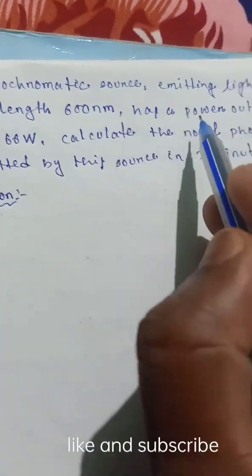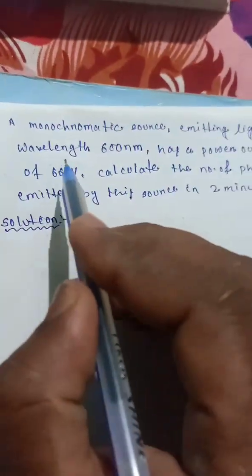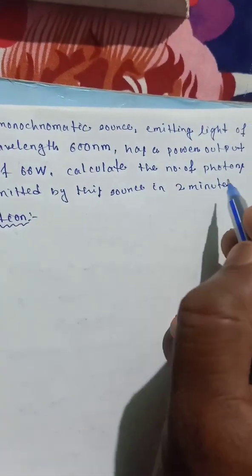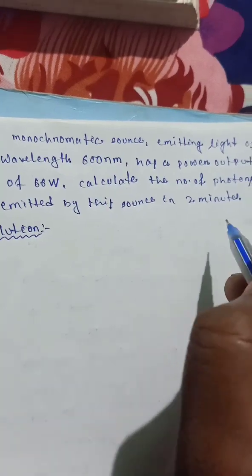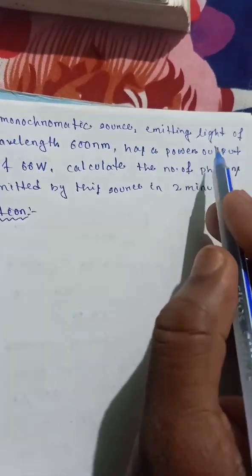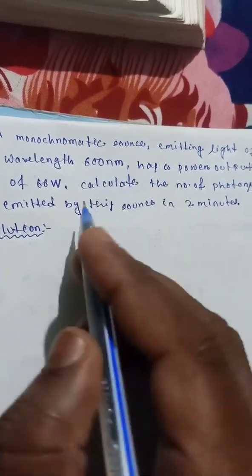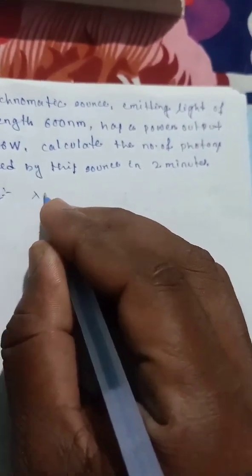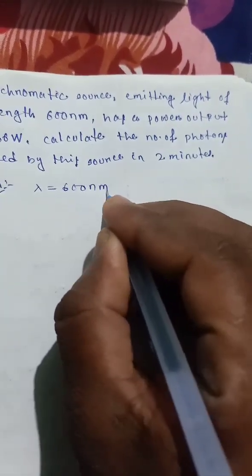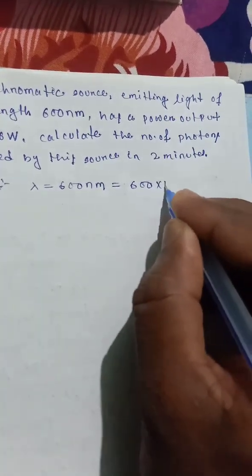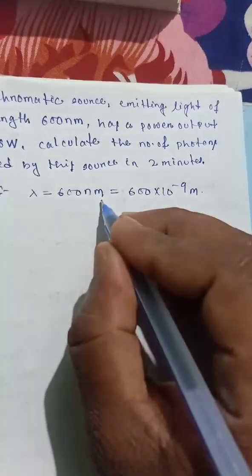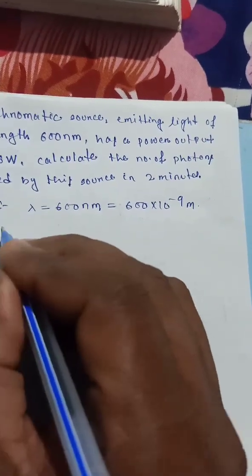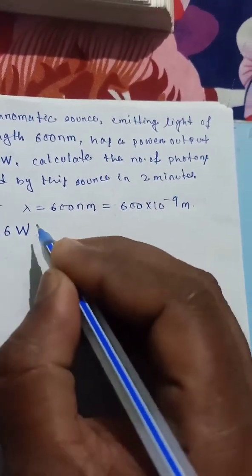A monochromatic source emitting light of wavelength 600 nanometers has a power output of 66 watts. Calculate the number of photons emitted by this source in two minutes. The wavelength lambda is equal to 600 nanometers, which is 600 into 10 to the power minus 9 meters. Power P is equal to 66 watts.